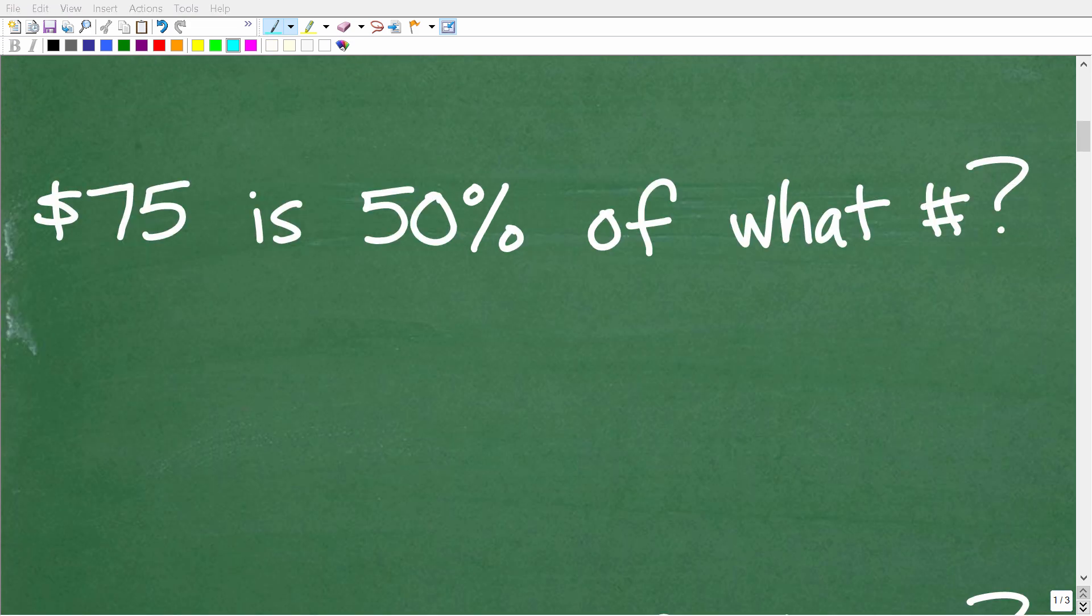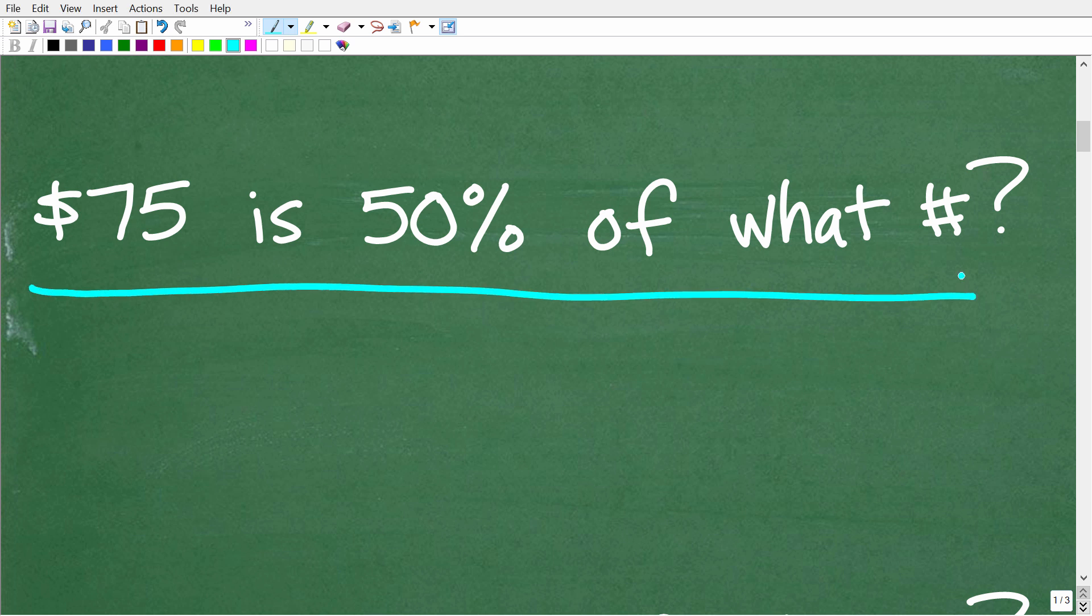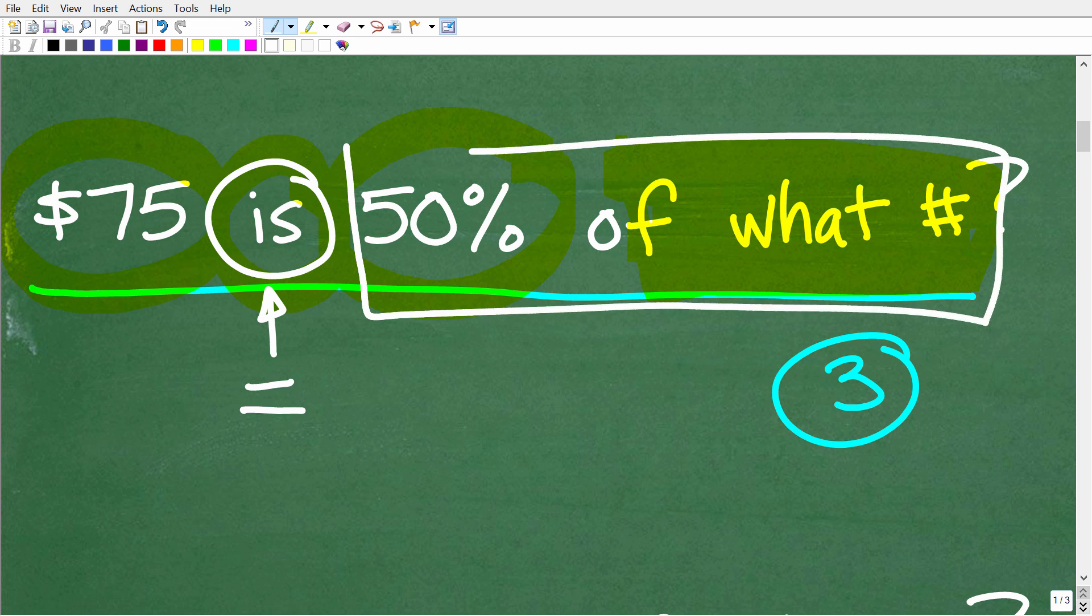The first thing that you want to do when you have a math problem is to make sure you actually understand the words in the problem. Try to get in the habit of reading a problem at least three times. We have $75 is 50% of what number or what value? Let's start with this word: is. Anytime you see is in a math problem, that's the same thing as the equal sign. We have $75 is equal to 50% of what number?